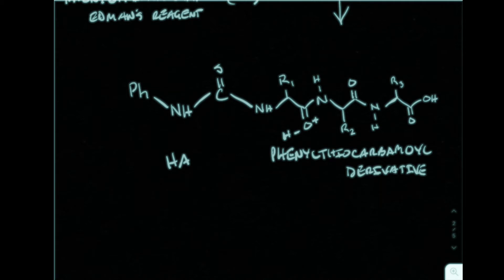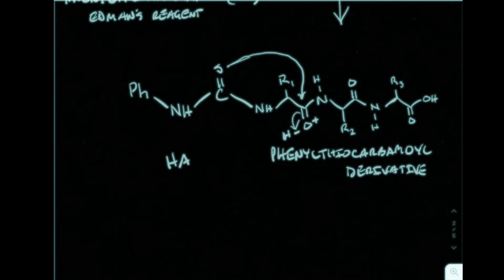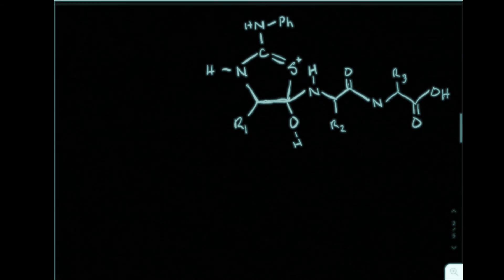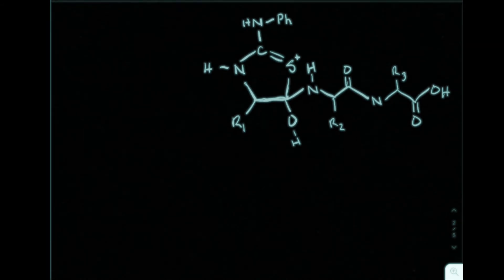Given that we have this protonated oxygen, we're going to utilize the sulfur of the phenyl thioisocyanate for its nucleophilic capabilities. Under acidic conditions, this sulfur acts as a nucleophile and attacks the carbonyl oxygen, which leads to the disruption of the pi bond and the production of a new intermediate containing a five-membered ring. In this new intermediate, the sulfur atom carries the positive charge, and all amino acid residues remain intact.